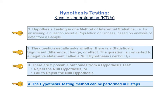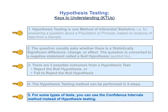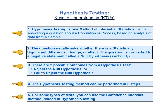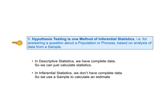The fourth KTU is: the hypothesis testing method can be performed in five steps. The fifth key to understanding is: for some types of tests, you can use the confidence intervals method instead of hypothesis testing. And here on one page is the complete list of keys to understanding the concept of hypothesis testing. You may want to pause the video here and read them all together. Let's begin our detailed explanation of each key to understanding.